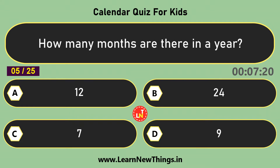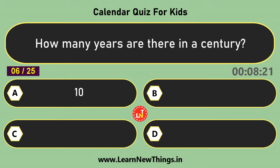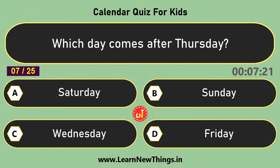How many months are there in a year? 12. How many years are there in a century? 100. Which day comes after Thursday? Friday.